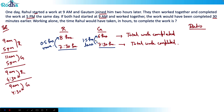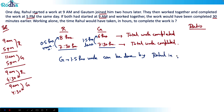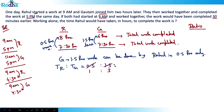That basically means: the work that Gotham would have done in 1.5 hours can be done by Rahul in only 0.5 hours. So Gotham's 1.5 hours of work equals Rahul's 0.5 hours of work. Therefore the time ratio of Rahul to Gotham is 0.5 to 1.5, which simplifies to 1 is to 3.